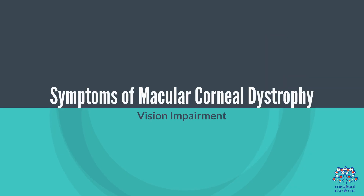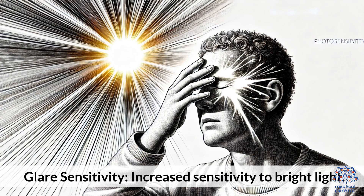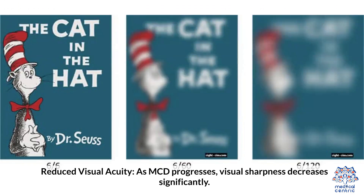Symptoms of Macular Corneal Dystrophy include vision impairment with blurry or hazy vision as early symptoms, increased sensitivity to bright light, and reduced visual acuity. As MCD progresses, visual sharpness decreases significantly.